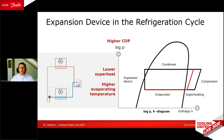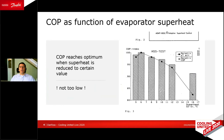We can reduce the superheat setting quite often. When we do that, we get a little bit of an increase in the evaporating temperature, and that helps us to have a more efficient system. The question is, of course, how much can we reduce the superheat?